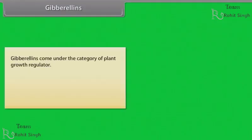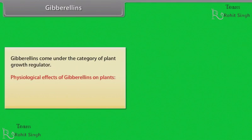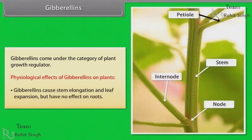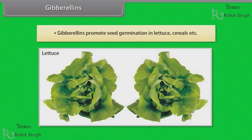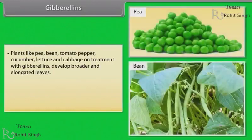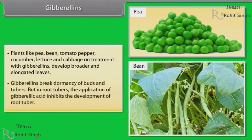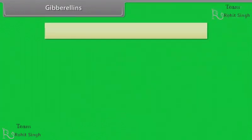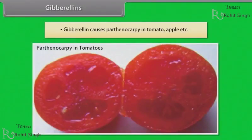Gibberellins come under the category of plant growth regulator. Physiological effects of gibberellins: they cause stem elongation and leaf expansion but have no effect on roots. Gibberellins promote seed germination in lettuce, cereals, etc. Plants like pea, bean, tomato, pepper, cucumber, lettuce and cabbage, on treatment with gibberellins, develop broader and elongated leaves. Gibberellins break dormancy of buds and tubers, but in root tubers, application of gibberellic acid inhibits the development of root tubers. Gibberellins also cause parthenocarpy in tomato, apple, etc.